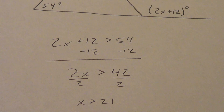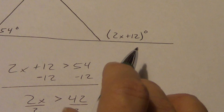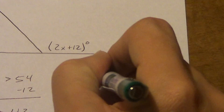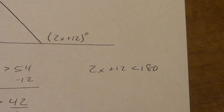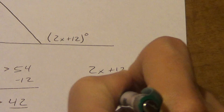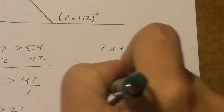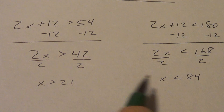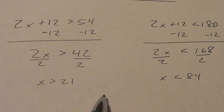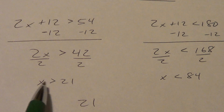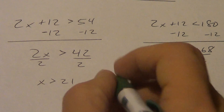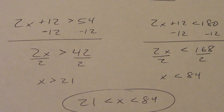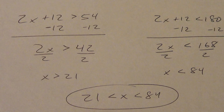That doesn't fully narrow it down — it could be lots of different numbers. We can narrow it down more because what do we know about an angle? This angle can't be more than 180 degrees. So 2x plus 12 is less than 180. Subtract 12: 2x is less than 168. Divide by 2: x is less than 84. Now we've narrowed it down more. We can write these two things as one answer: write the smallest number first, so 21. Since x is greater than 21, that means 21 is less than x, and then x is less than 84. So x is somewhere between 21 and 84.